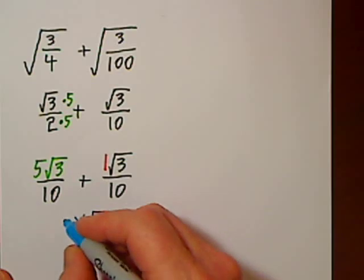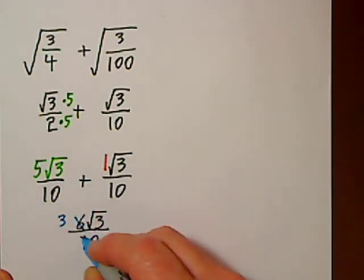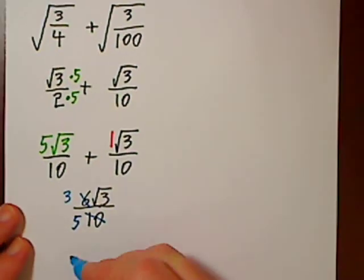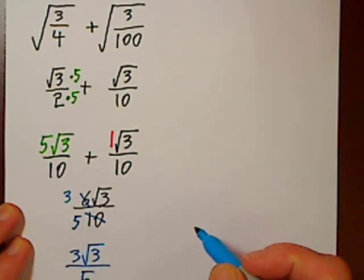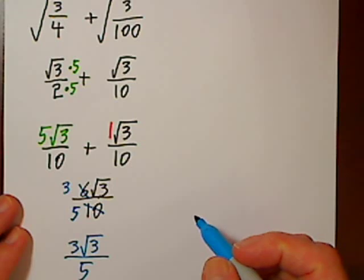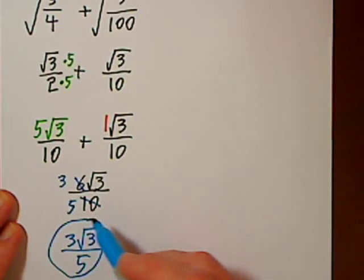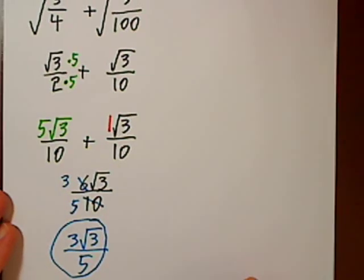So 2 goes into 6 three times, 2 goes into 10 five times. So our final answer is 3 times the square root of 3 over 5—oops, sorry, a little bit off the screen there. So that's our final answer.